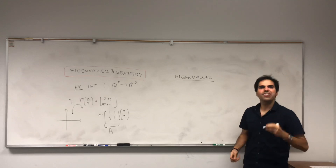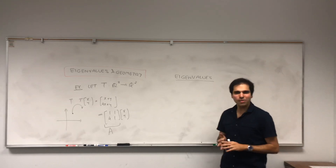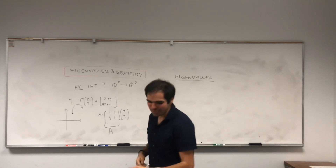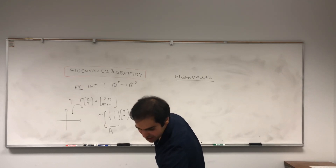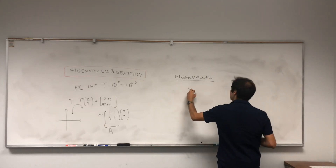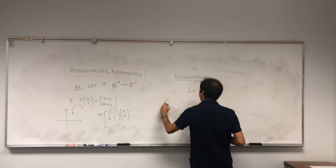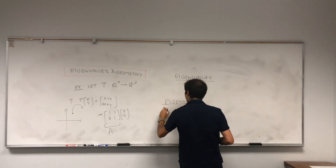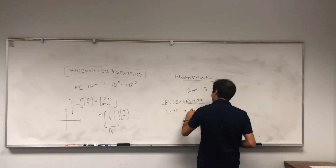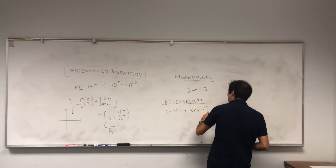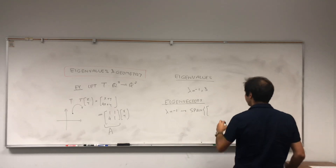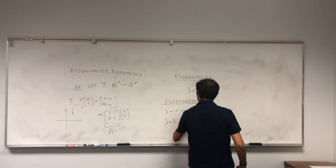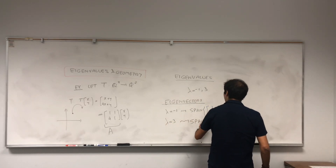I have done another video on how to find the eigenvalues and eigenvectors of a 2×2 matrix, so I'm not going to do that now, because I want to keep it as short as possible. But let me tell you what the eigenvalues are. It turns out the eigenvalues are λ = -1 and λ = 3. For λ = -1, the eigenvector is any multiple of the vector (1, -2). And for λ = 3, it's any multiple of (1, 2).